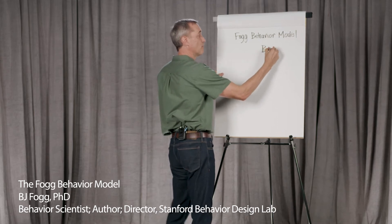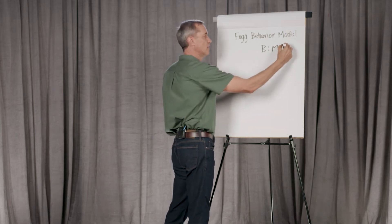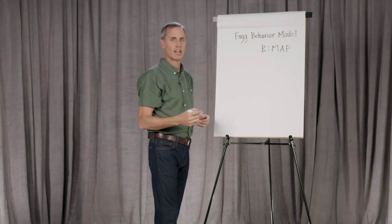Behavior happens when three things come together at the same moment. There's motivation to do the behavior, there's ability to do the behavior, and there's a prompt. The prompt is the cue, the thing that says do this behavior now.